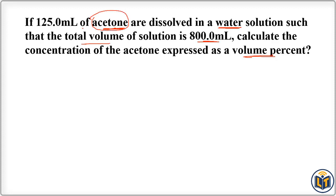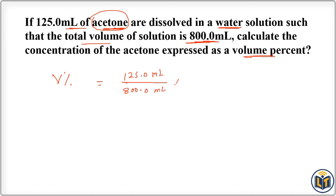The volume of acetone and the volume of the solution are both given, so we can apply the volume percentage formula. Volume percentage of acetone equals volume of acetone, which is 125.0 ml, divided by total volume of the solution, which is 800.0 ml, multiplied by 100. This gives us 15.625 percent, approximately 16 percent — the volume percentage of acetone in the solution.